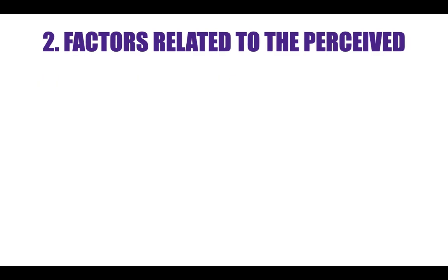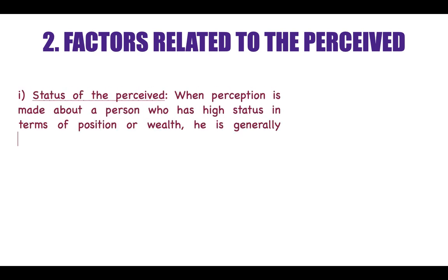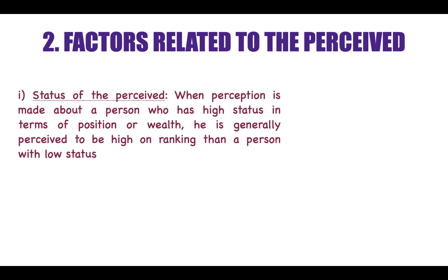These are the factors related to the perceiver. Now, what are the factors related to the perceived? One could be the status of the perceived. When a perception is made about a person who has high status in terms of position and wealth, he is generally perceived to be ranked higher than a person with low status. Status can also determine the ranking of the person in that society and that is how you perceive about the perceived person.